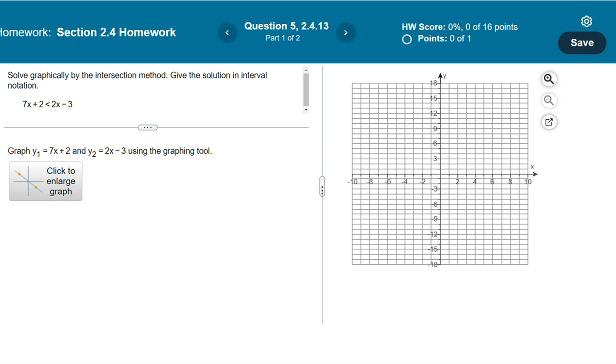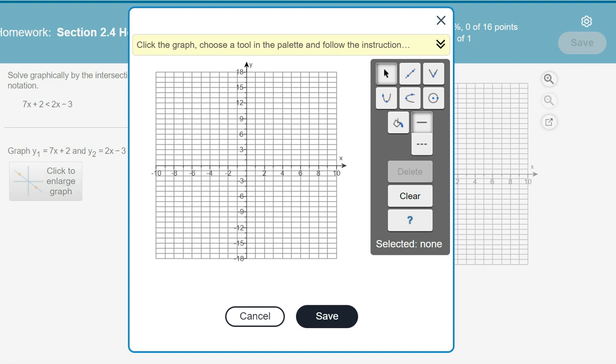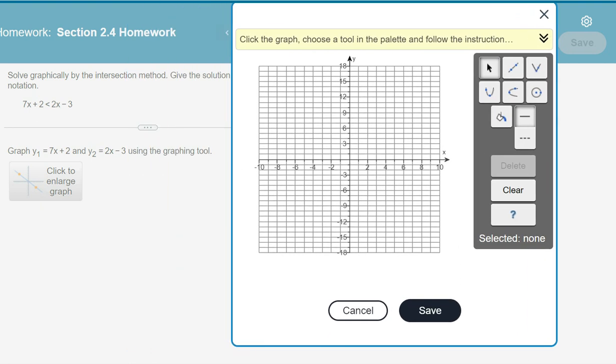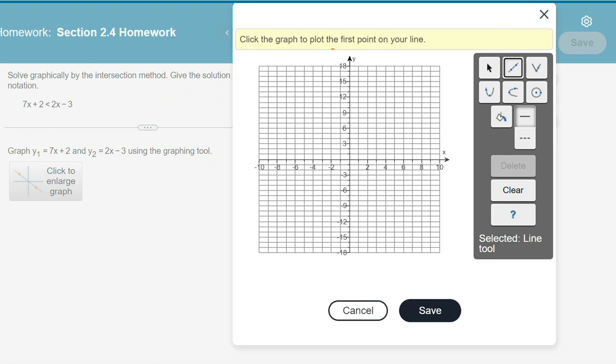Okay, it tells you to graph y sub 1 as 7x plus 2, so I'm going to click to enlarge the graph and then I'm going to click on the line tool which is right here.